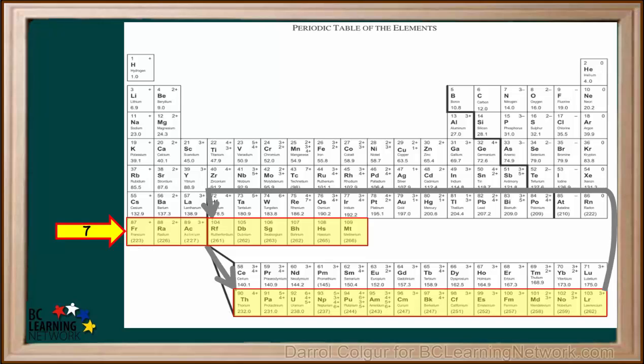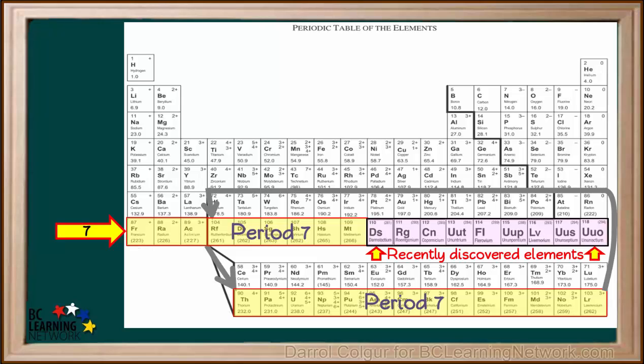So all of the elements shaded in yellow here belong to Period 7. The periodic table you are given ends here at element 109, mitnerium. However, this table was published quite a while ago. Since then, more new elements have been discovered. These include elements 110 to 118, damstratium to union octium.